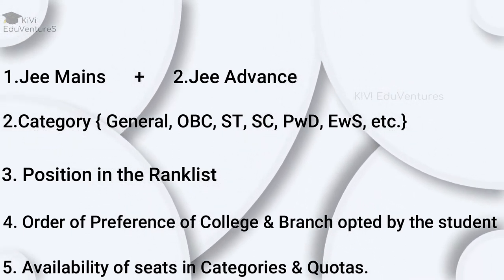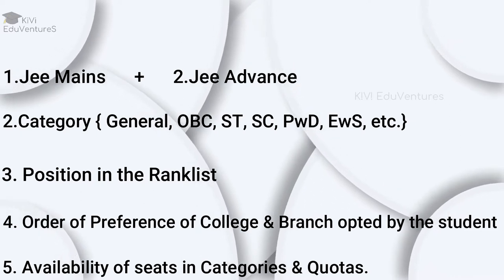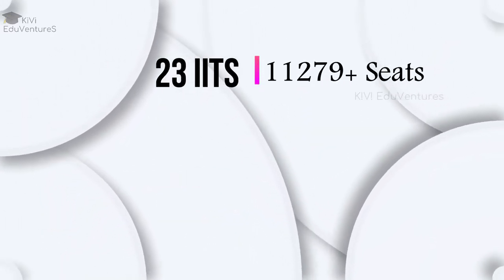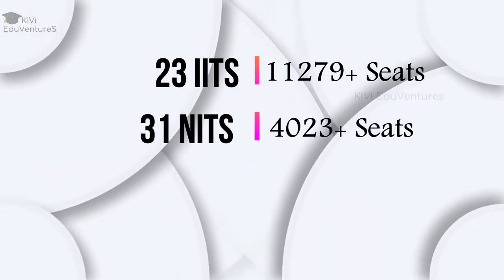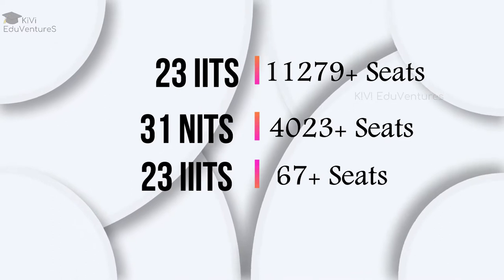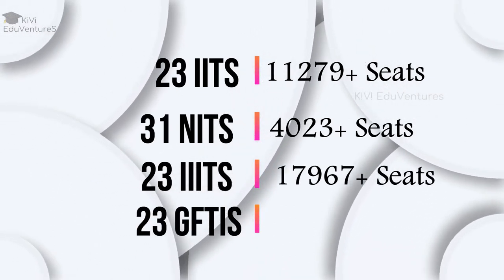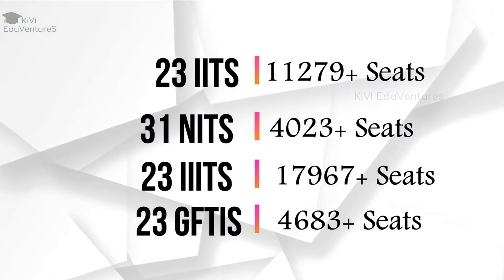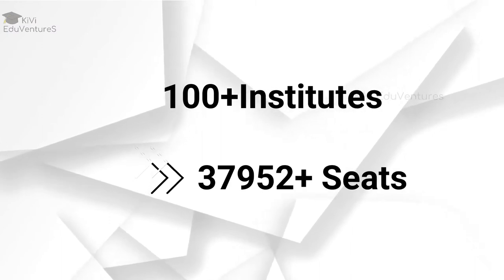Let us discuss the classification of those 100 institutes and their number of seats. There are 23 IITs with 11,279 seats, 31 NITs with 4,023 seats, 23 IIITs with 17,967 seats, and 23 other government-funded technical institutes with more than 4,683 seats. This gives a total of 100 institutes with more than 37,952 seats.